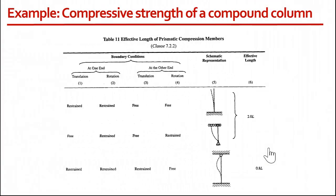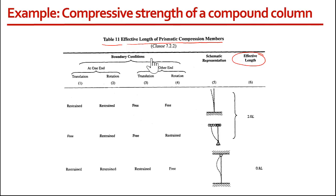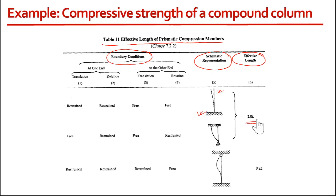Here is a snapshot of Table 11 from IS 800, which gives the effective length of prismatic compression members under different boundary conditions. For example, if one end is fixed and the other is free, the effective length is 2L, meaning K equals 2. If one end is fixed and the other is hinged, then K equals 0.8, which is what we have used.